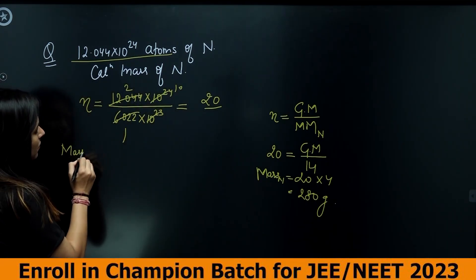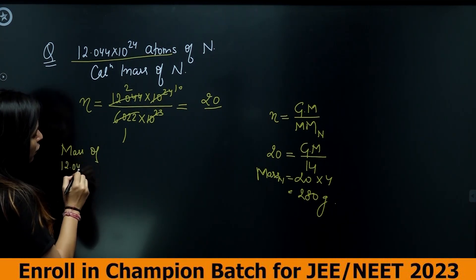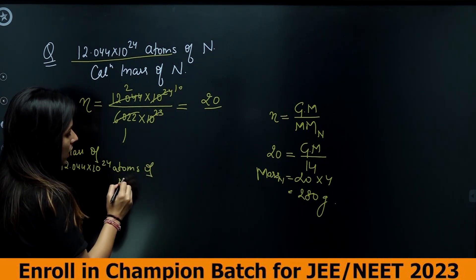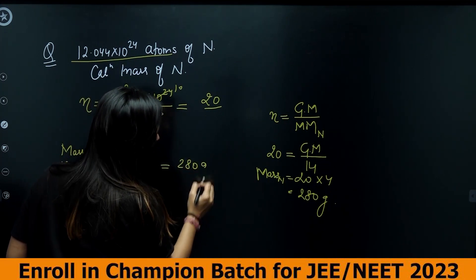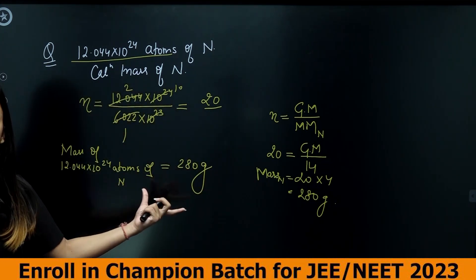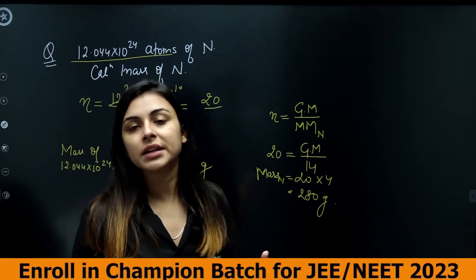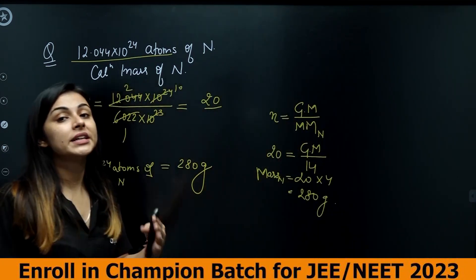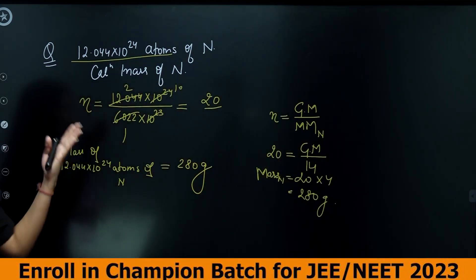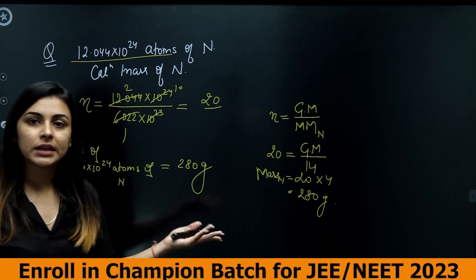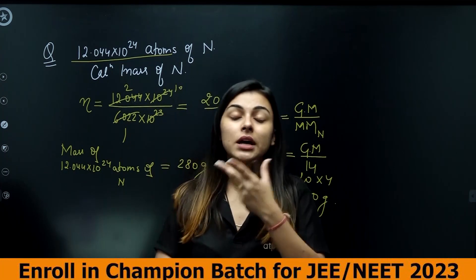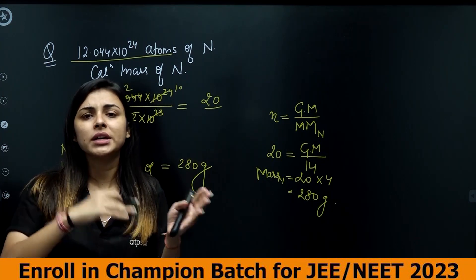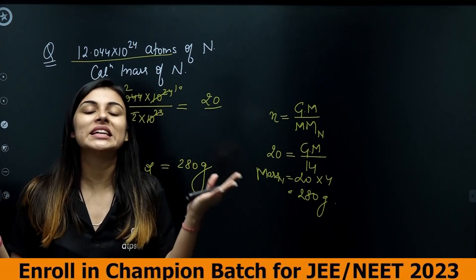So the mass of 12.044 × 10²⁴ atoms of nitrogen is 280 grams. This shows how inter-conversions work — once you find moles in one unit, you can convert to another. Mole concept is very easy if you know how to apply it: convert from one form to another, and you can find anything you want.